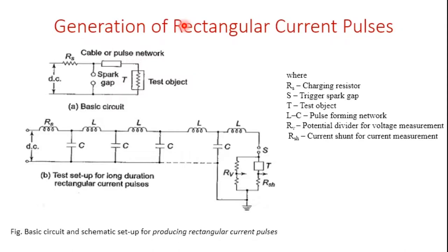Next, we have the generation of rectangular current pulses. Rectangular current pulses of high magnitude can be generated by discharging a pulse network or a cable which was previously charged. The basic circuit for generating rectangular current pulses uses a cable or equivalent pulse network charged to a specified value with the help of a DC supply.